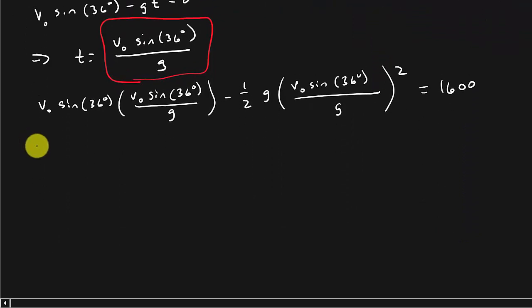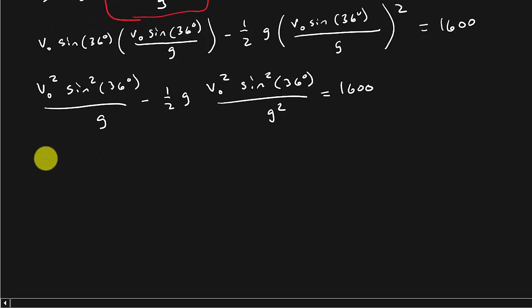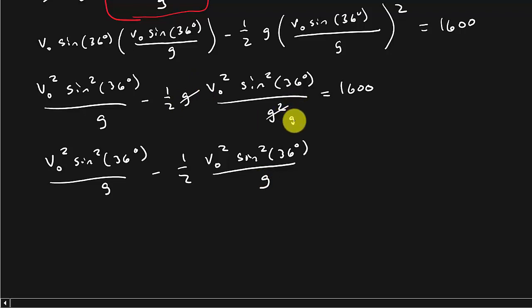That's going to be V naught squared times sine squared 36 over G minus one half G times V naught squared sine squared 36 over G squared. I squared that, and that should equal 1600. I get V naught squared sine squared 36 over G minus one half V naught squared sine squared 36 over G. That G and that G will cancel. I'm left with just a G, and that equals 1600.